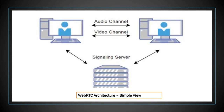Here is one important point you should remember: both peers have a connection to the signaling server before they have a connection to each other. Now you have a basic idea of how WebRTC connects peers. Next, let us look at the detailed view of the WebRTC connection architecture.